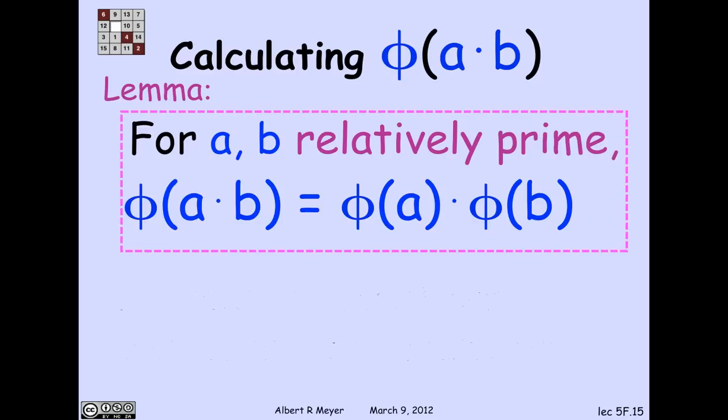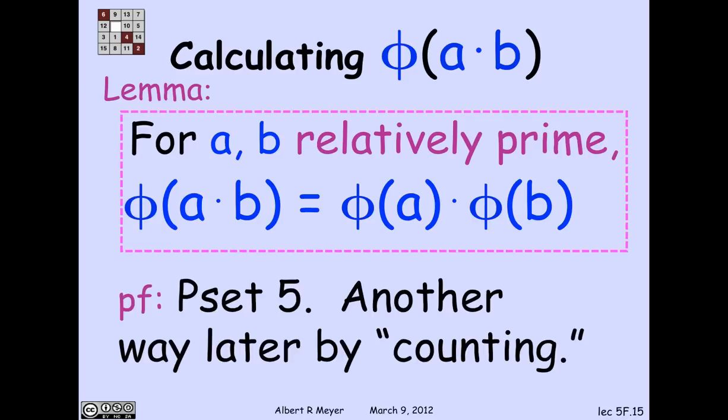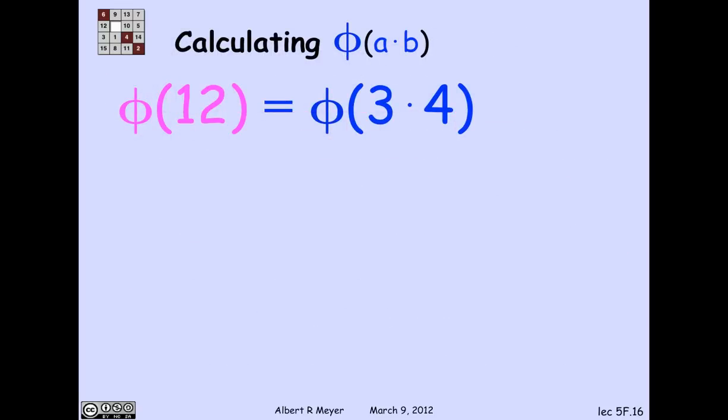Now, the proof of that, one proof is on problem set 5. And there's another proof that we'll see in a couple of weeks when we get into counting and the inclusion exclusion principle. Let's just use this fact about phi, the multiplicativity of phi, to see how it lets us calculate phi of an arbitrary number.